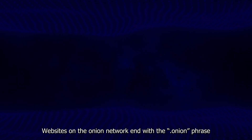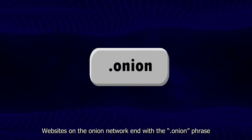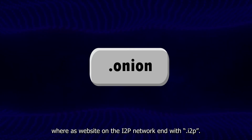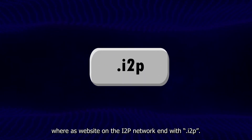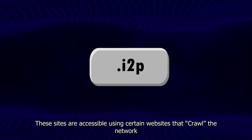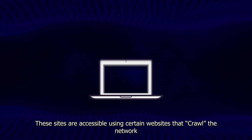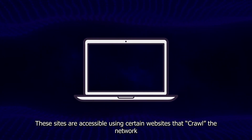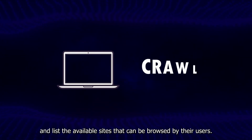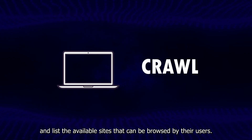Websites on the Tor network end with the .onion suffix, whereas websites on the i2p network end with .i2p. These sites are accessible using certain websites that crawl the network and list the available sites that can be browsed by their users.